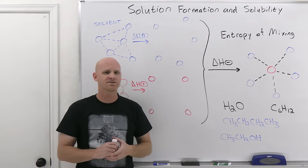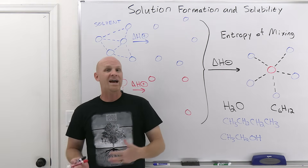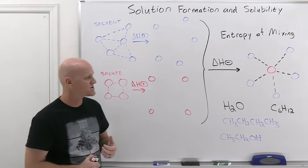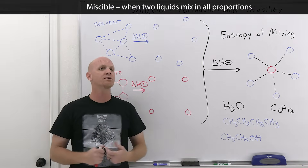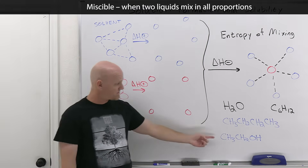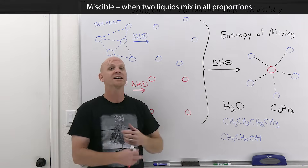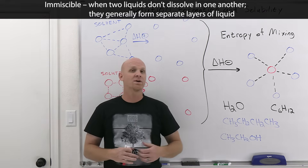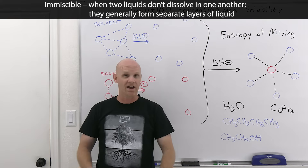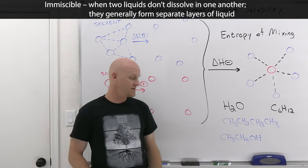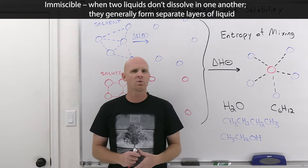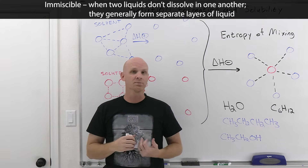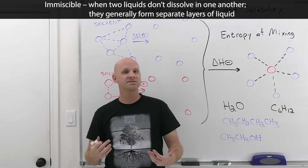Next, we have vocabulary words: miscible and immiscible. These are words reserved for the solubility of a liquid solute in a liquid solvent. If two liquids can mix in any proportion, we refer to them as being miscible — ethanol and water exactly fit that description. At the other end of the spectrum, immiscible means two liquids largely don't mix to any significant extent. Oil and water are a classic example: the oil settles out in a layer on top of the water with no appreciable mixing.